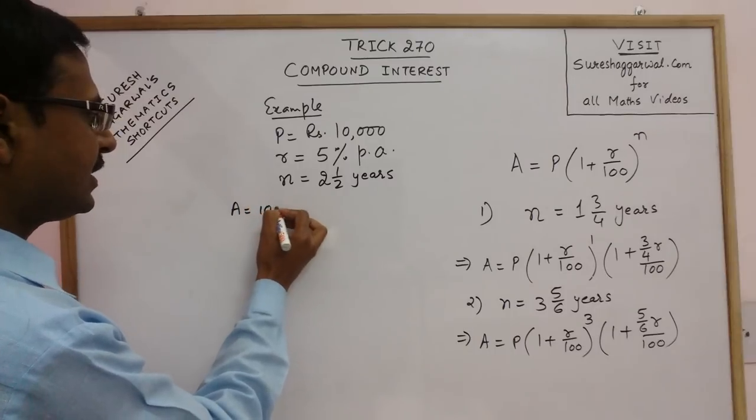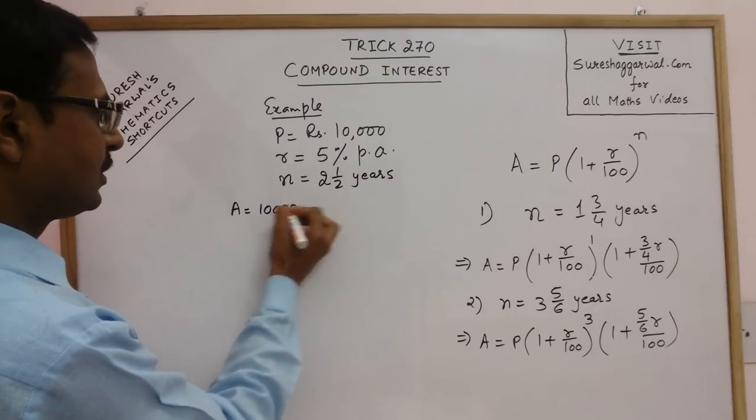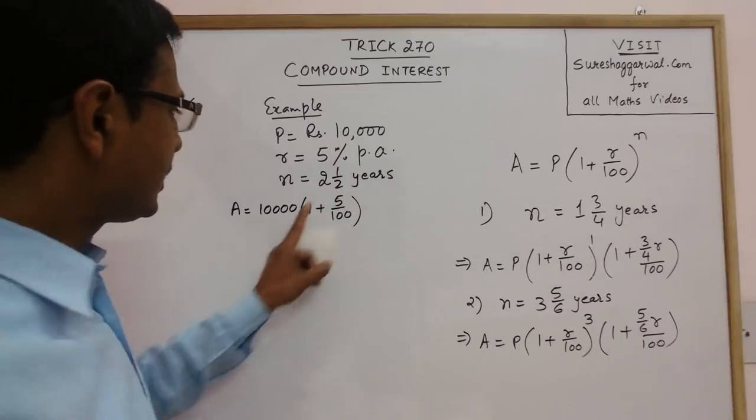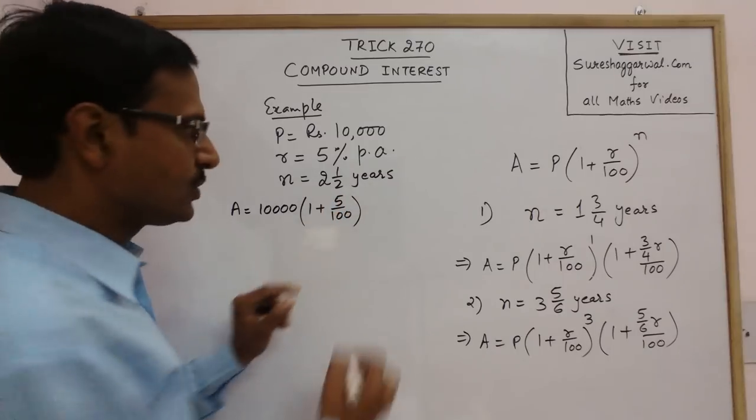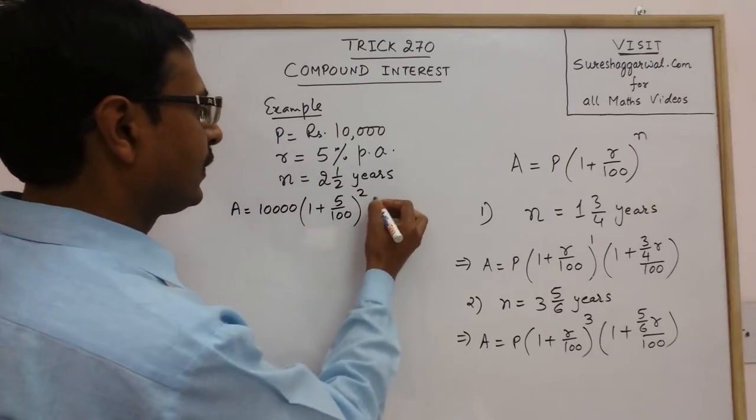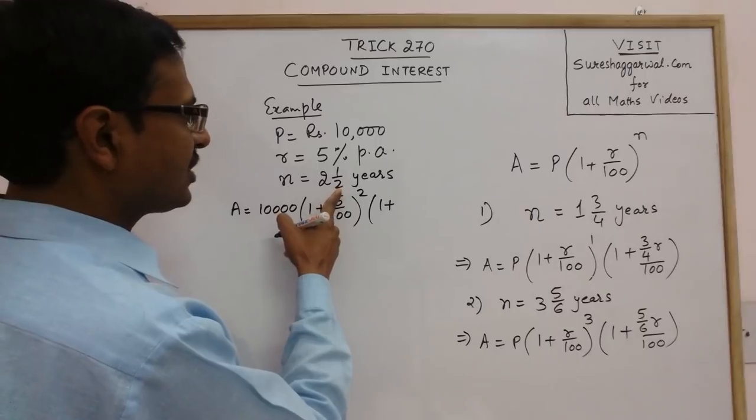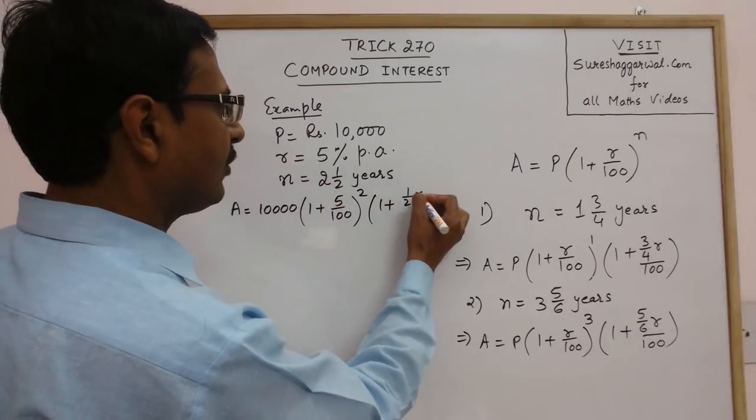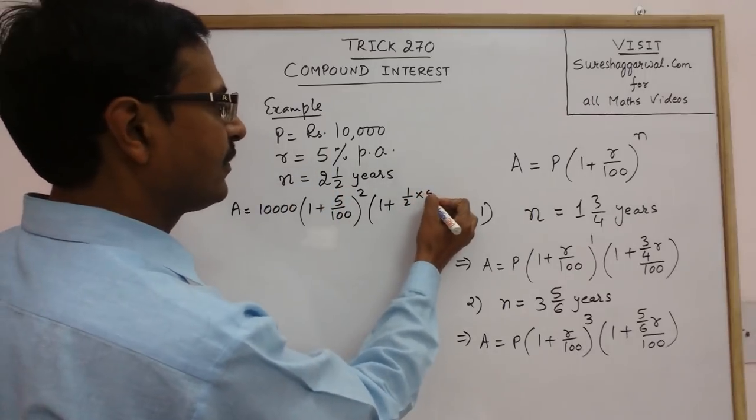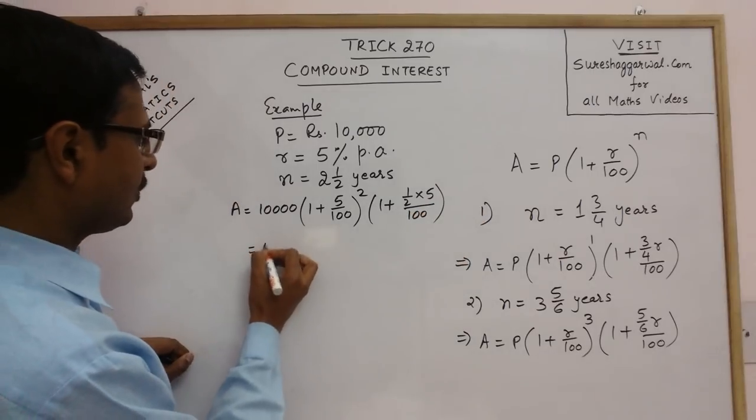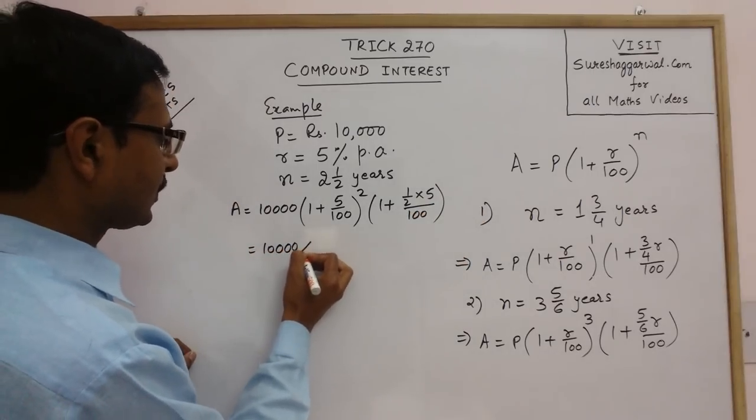P is 10,000, first bracket 1 plus R, R is 5. Now see, R is 5 upon 100. So this will give you 100, this will give you 100,000 into, this is 105 upon 100.